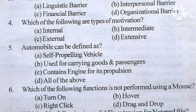Question number 5: an automobile can be defined as a self-propelling vehicle used for carrying goods and passengers, contains an engine for its propulsion, or all of the above?